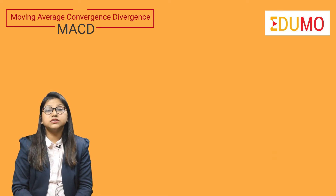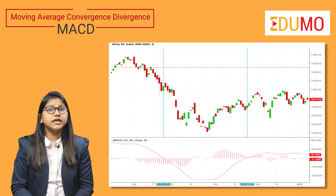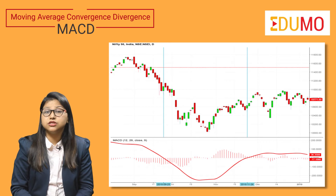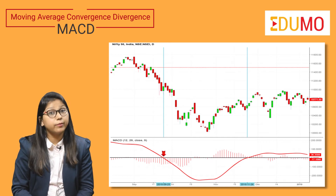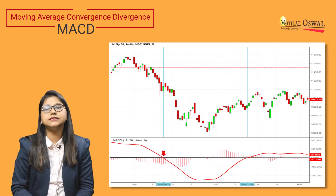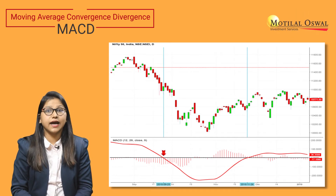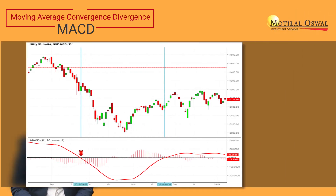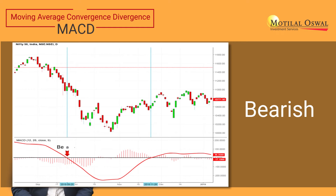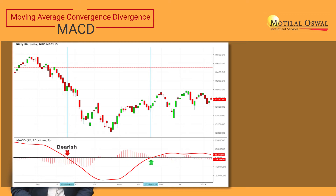First is the zero line. When the MACD line crosses the zero line from above, it indicates that the trend may become bearish. And when the MACD crosses the zero line from below, it indicates that the trend may become bullish.